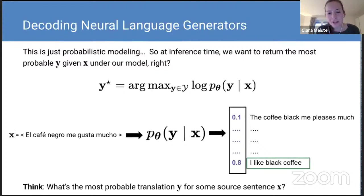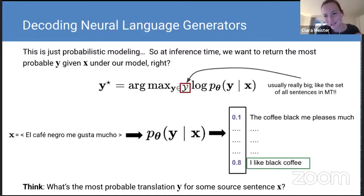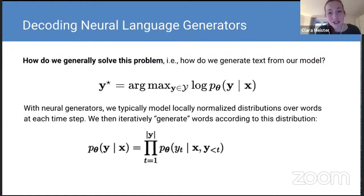We can think of this informally as: what's the most probable translation for the source sentence we have? But the problem is that our output space is really big. In machine translation, it's the set of all sentences that can be generated from a vocabulary, and this number can quite easily become greater than the number of particles in the universe. So how do we generally solve this problem — how do we generate text from our model?